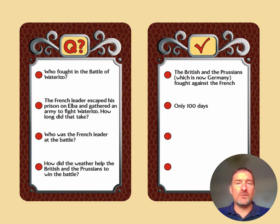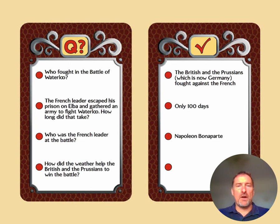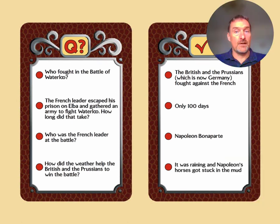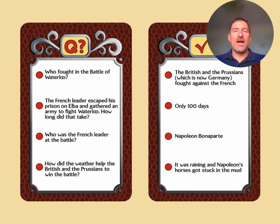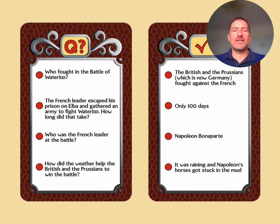Who was the French leader at the battle? That was Napoleon. And how did the weather help the British and Prussians win the battle? It was raining and Napoleon's horses got stuck in the mud. The French cavalry were one of the best trained in the world and they normally caused devastating destruction to the enemy, but because of the wet ground, they couldn't. So that really helped.